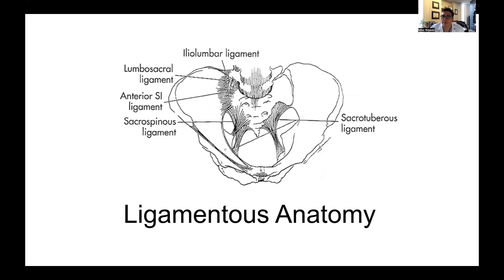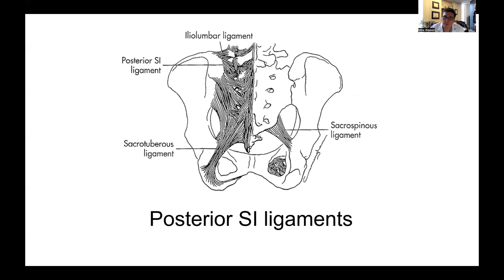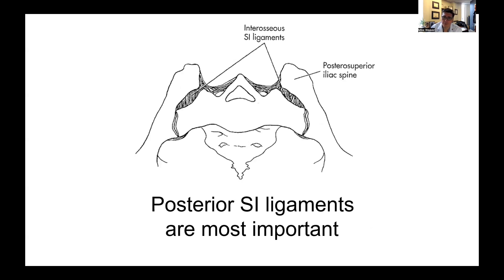Detrás, los ligamentos robustos del sacroiliaco. El ligamento sacroiliaco anterior es relativamente más débil. En la parte posterior, unos ligamentos muy fuertes: el complejo ligamentoso sacroiliaco posterior y la parte posterior de las articulaciones sacroiliacas forman la piedra angular de la pelvis. Es muy importante centrarse en la alteración del anillo pélvico posterior y en cualquier alteración de estos ligamentos. En la parte anterior hay un espacio articular, pero en la posterior hay ligamentos muy fuertes que mantienen unida la pelvis.